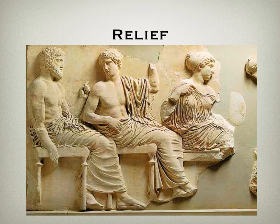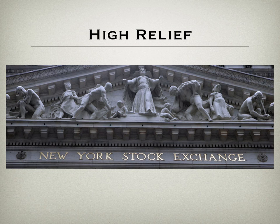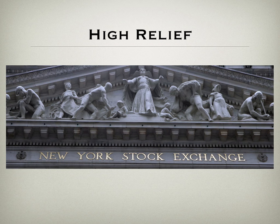There are different types of relief. You have low relief or bas-relief, which projects only a small distance from the background — you can see this in the Egyptian work shown here. And then there is high relief or haut-relief, which projects at least half its depth. The example at the top is from the pediment of the New York Stock Exchange. When you look at it, these figures almost seem to be freestanding, but they're actually still relief sculptures — attached to the background.